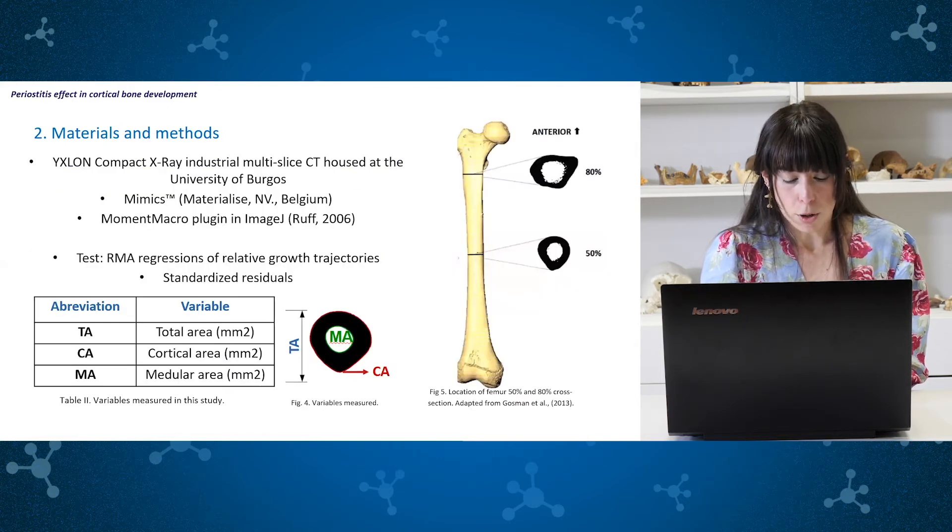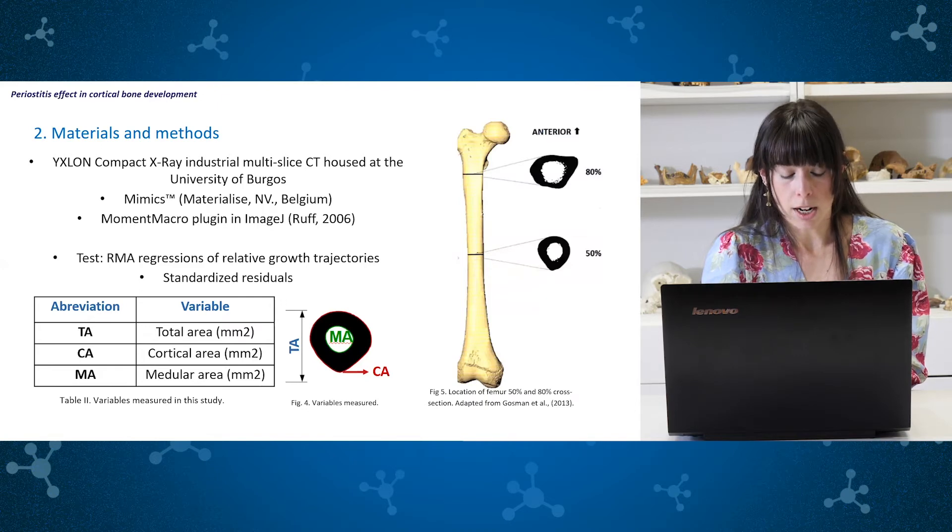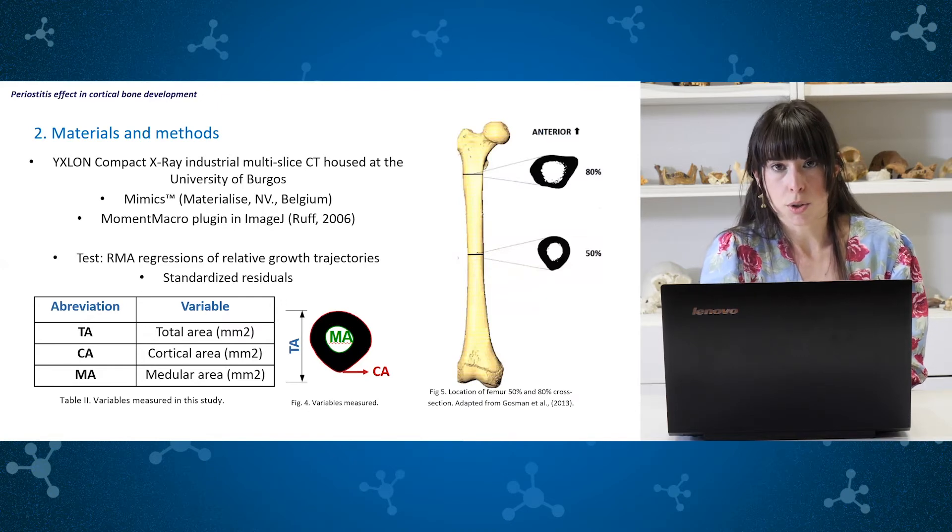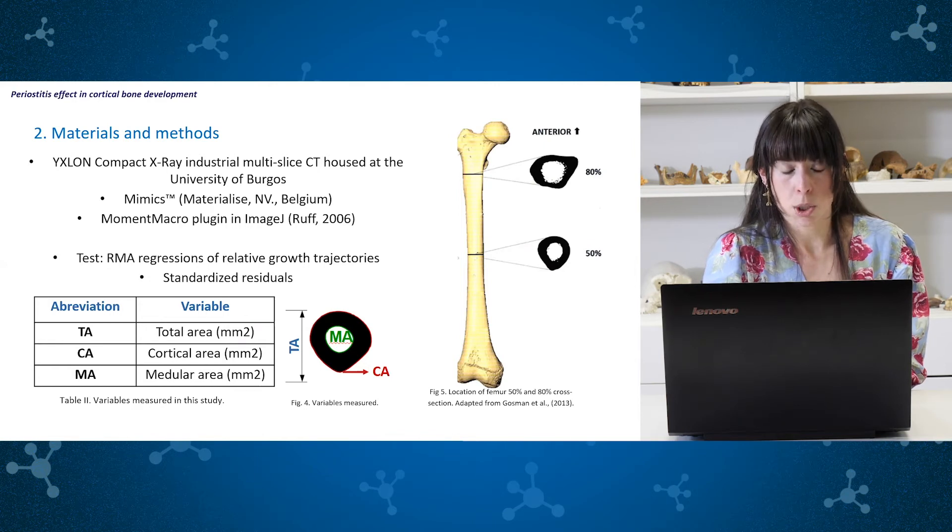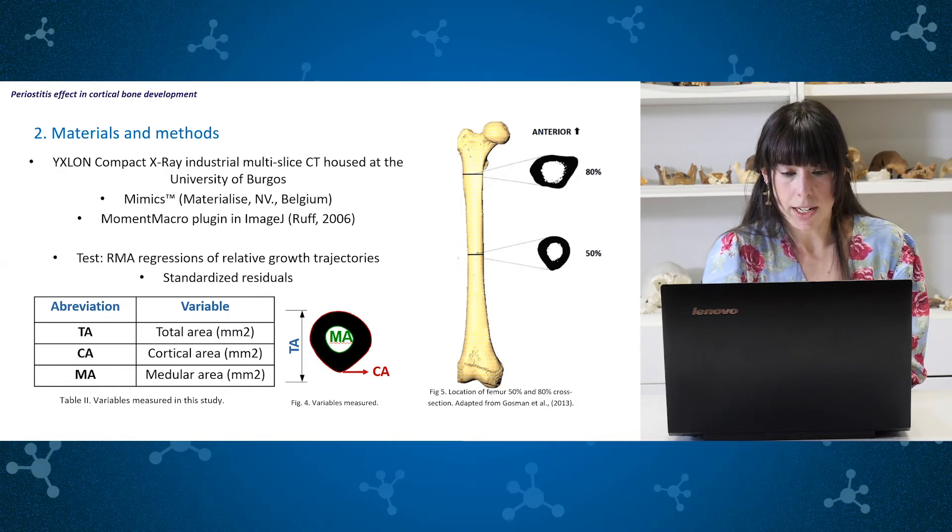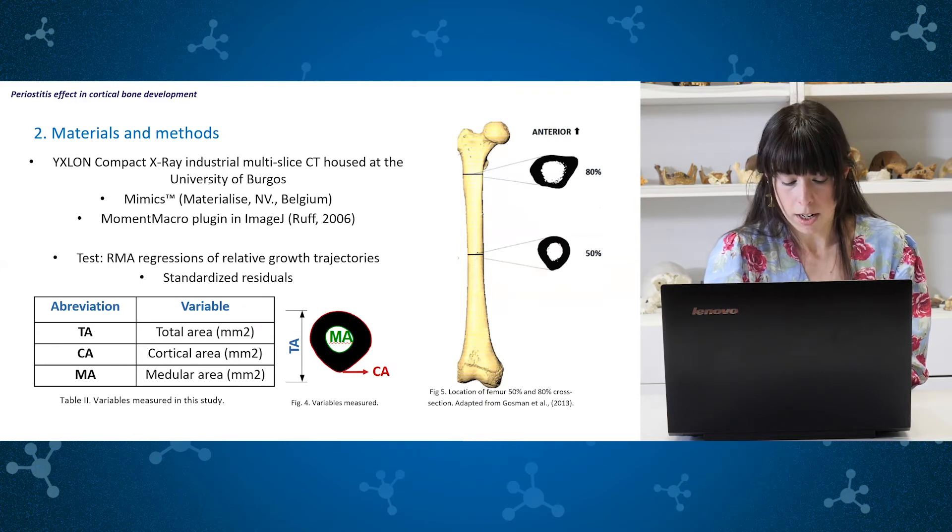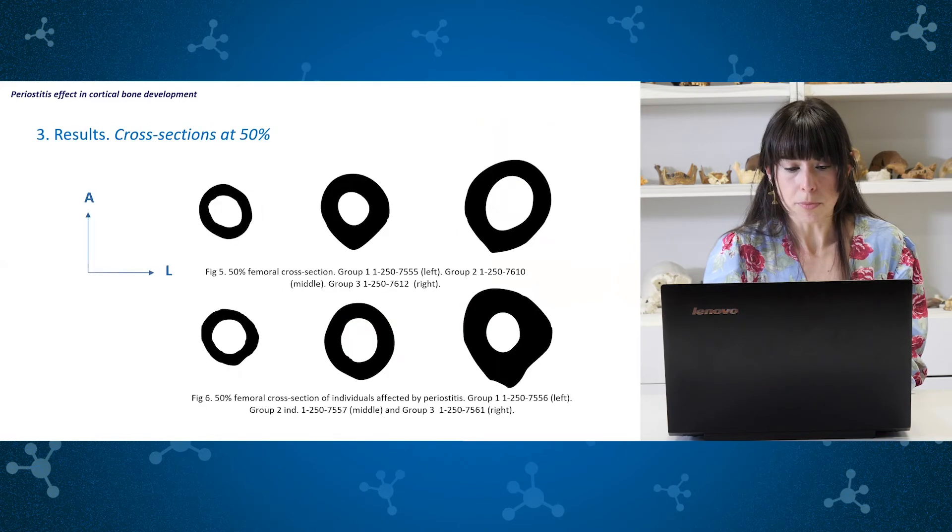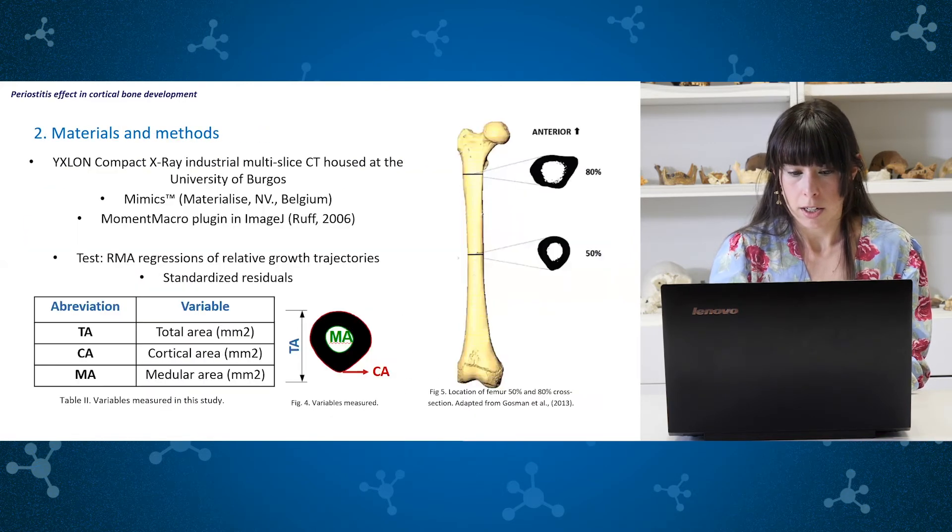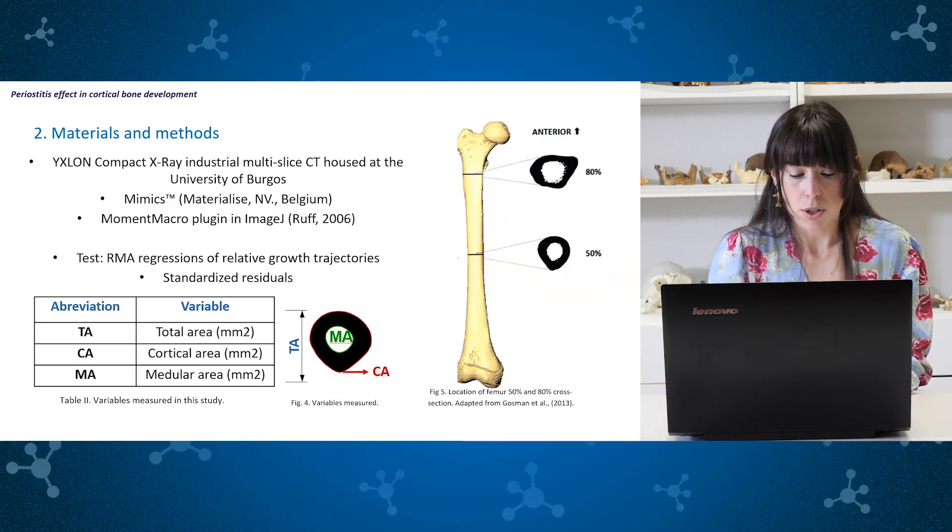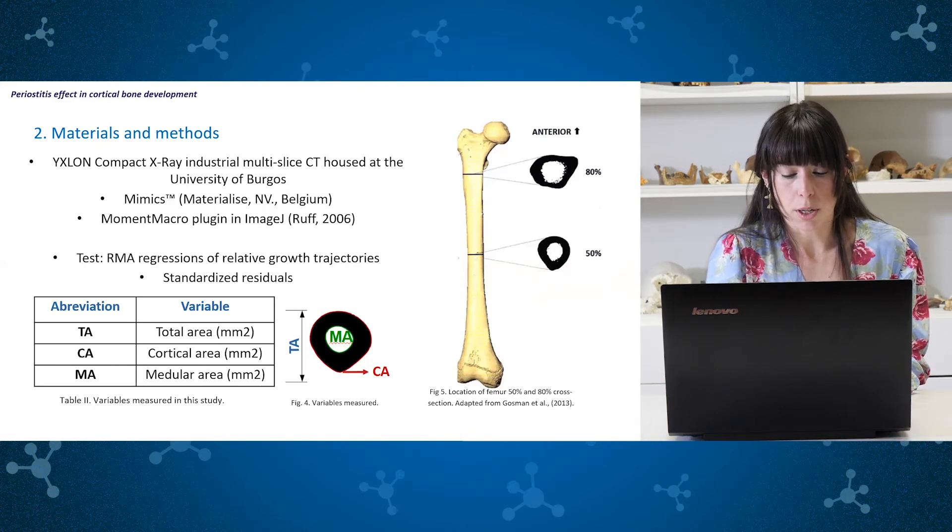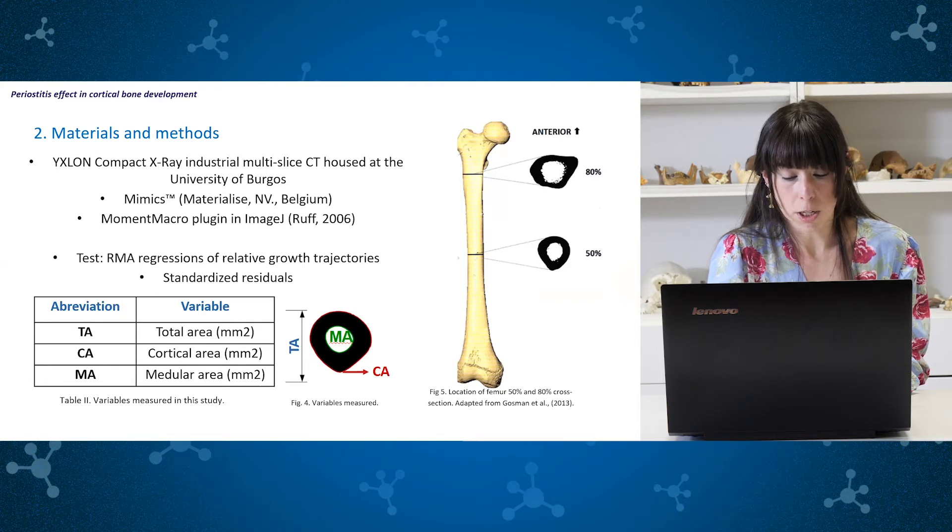We performed computerized tomography scans using an industrial multi-slice CT housed at the University of Burgos. CT images were visualized using Mimics software. Femoral cross sections were taken at 50% and 80% of diaphyseal biomechanical length, beginning distally by convention as it can be seen in the figure at the right.